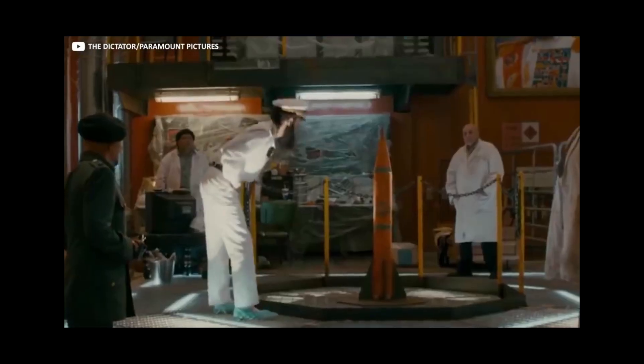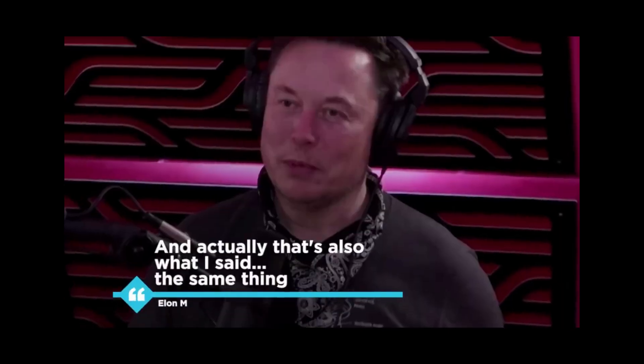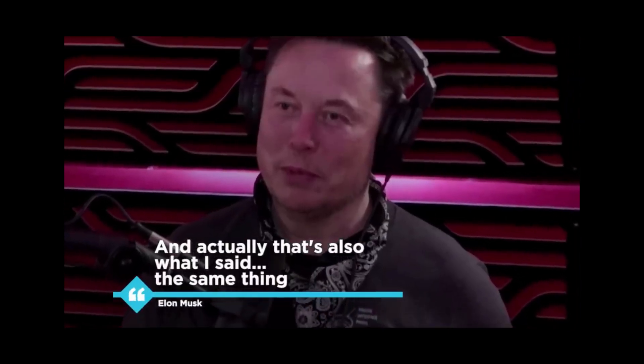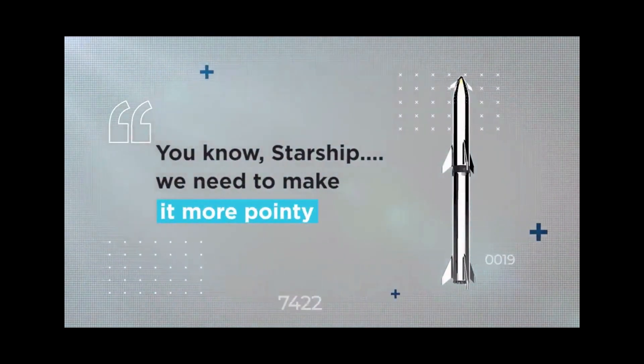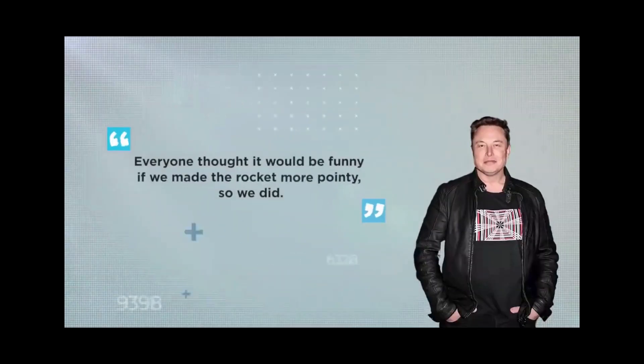During a recent interview with podcast host Joe Rogan, Elon Musk offered a typically smirk-inducing glimpse into the thought processes behind his signature rocket. Musk told Rogan he'd watched screwball Sacha Baron Cohen comedy The Dictator, in which a tin-pot leader of a fictional nation orders his engineers to make a rocket pointier in order to strike fear into the hearts of his enemies. And actually, that's also what I said, the same thing, Musk told Rogan. You know, Starship, we need to make it more pointy.